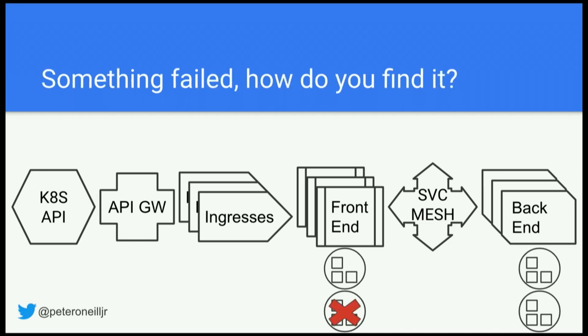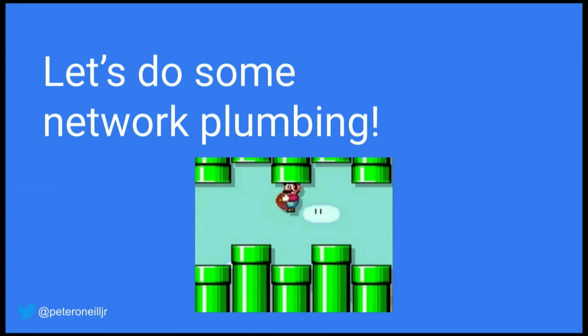Now something goes wrong. One of these pods, one of these containers, one of these things fails. From an end user perspective you have no idea what's actually happening — it's just not working. As any good network engineer does, you kind of just start at one end, fish the pipe and see what's happening. Traditional network plumbing: you start at one end, go to the other.